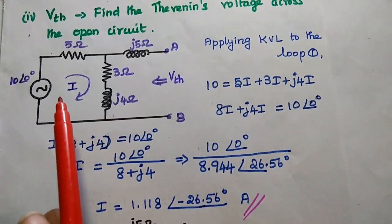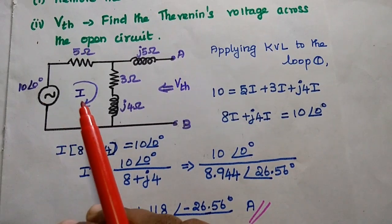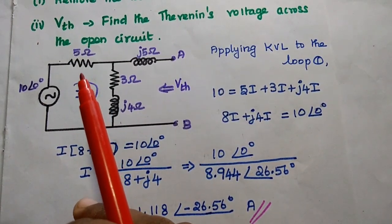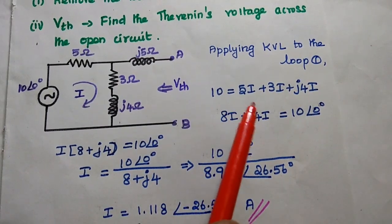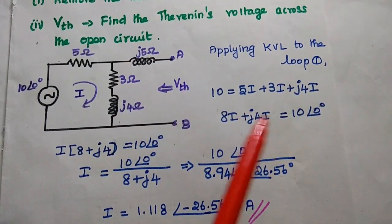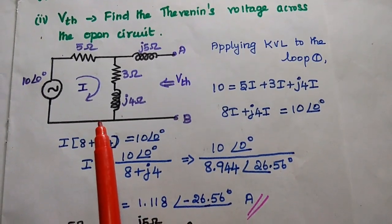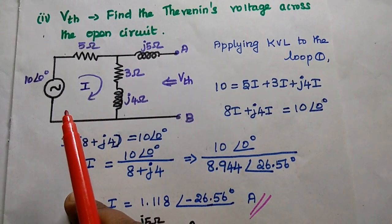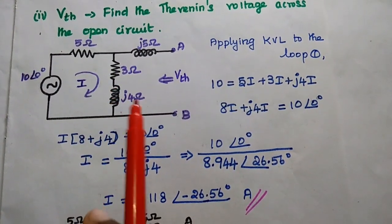We write Kirchhoff's Voltage Law as: 10∠0° equals the voltage drop across 5 Ohm, which is 5I, plus 3I plus J4I. In this closed loop, voltage rise is equal to the sum of voltage drops.